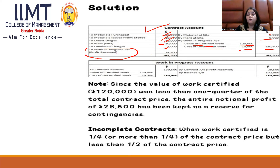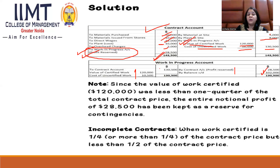In the work in progress account: work certified and work uncertified come on the debit side; the profit reserve (work in progress — notional profit) comes on the credit side, and the difference is the net balance carried forward. Since the value of work certified was less than one quarter of the total contract price, no profit is transferred to P&L — all notional profit is reserved in the work in progress account.